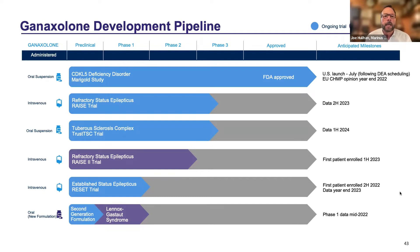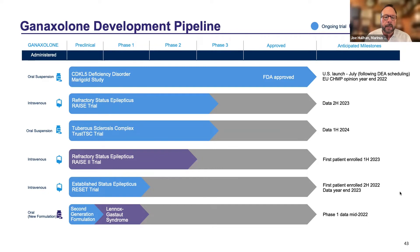Other indications for oral ganaxolone are tuberous sclerosis complex — we recently kicked off a phase three study there — and down the road we'll be looking at Lennox-Gastaut syndrome with a second-generation formulation. For the IV form, we're developing it in refractory status epilepticus; a study for U.S. registration is ongoing. A companion European trial will start next year, and we're beginning a study in established status epilepticus and benzodiazepine failures later this year.